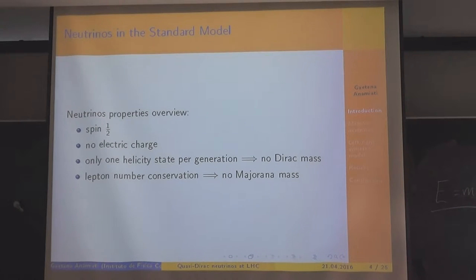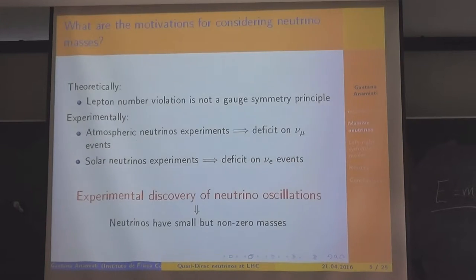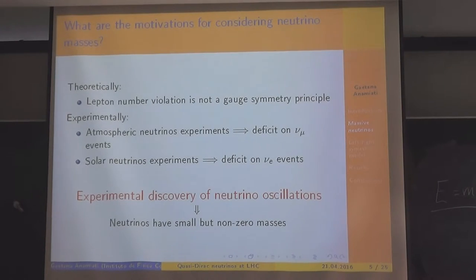There is another possibility, a Majorana mass term, but this possibility violates the lepton number, which is a quantity conserved in the standard model. So, what are the motivations for considering massive neutrinos?